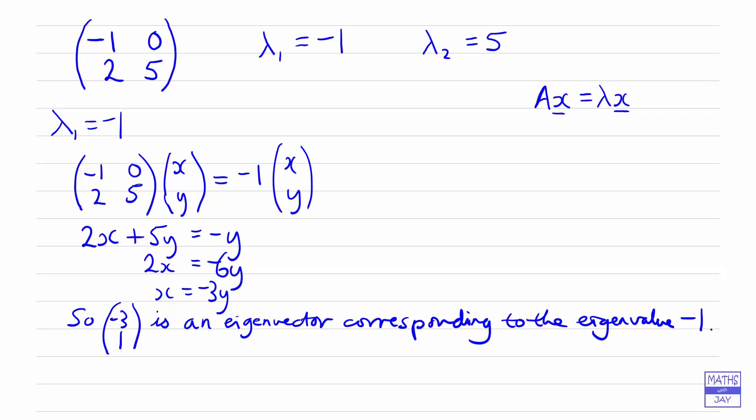So minus 3, 1 is an eigenvector — not the eigenvector, but an eigenvector. We've found an eigenvector corresponding to the eigenvalue we started with: when lambda is minus 1, then (minus 3, 1) is an eigenvector. Now we need to do the same for our other eigenvector.